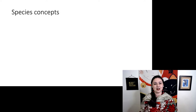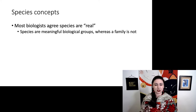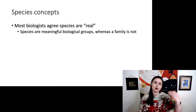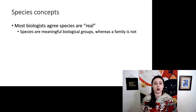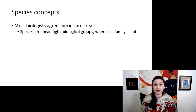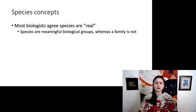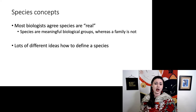Most biologists agree that species as a unit are real — meaning they are meaningful biological groups. Higher levels of organization in our taxonomy, such as a family or an order, aren't necessarily real groups, but they are still useful for organizing all of the different species. Species are the only truly real ones. Even though we agree that this is a real category, there are lots of different ideas on how to define a species.